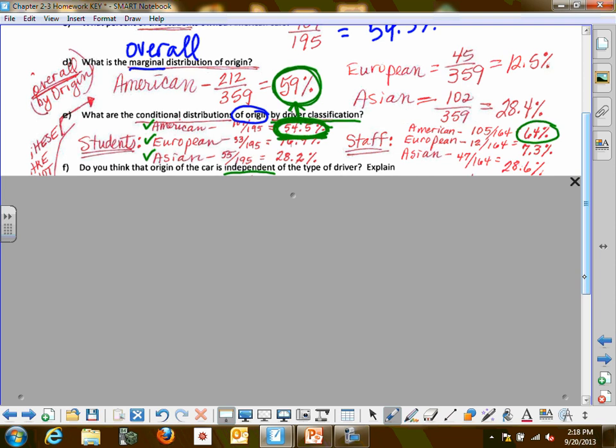The fact that you are a student is making you less likely to be driving an American-made car. Compare only conditional to marginal. When I look at this one for staff, 64% for staff, what am I going to compare that number to? Of for American. So what statement could I say about this 64%? In overall, yes. If you are a staff member, you are more likely to be driving an American-made car than overall. You can also call this expected, then expected.